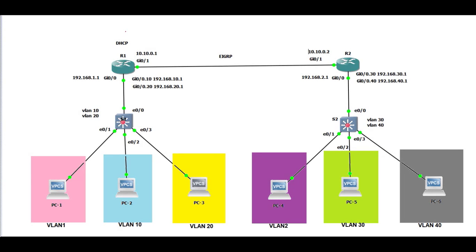DHCP will be configured on Router1 to distribute addresses for VLAN1, VLAN10, and VLAN20. On Router2 we are going to configure IP helper address for VLAN2, VLAN30, and VLAN40 in order to reach DHCP on Router1. Let's start with the configuration.